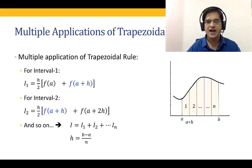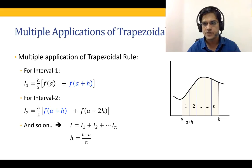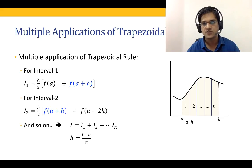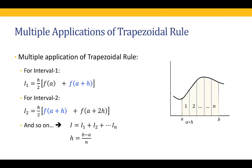The step size h is b minus a divided by n. When we have n intervals, we have n+1 points on the x-axis. For a single application of the trapezoidal rule there are just two points, a and b. Two applications give three points — a, the midpoint, and b — resulting in two intervals. Three intervals have four points, four intervals have five points, and so on: n intervals have n+1 points on the x-axis.